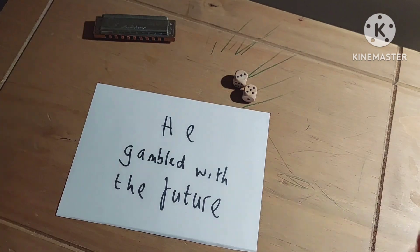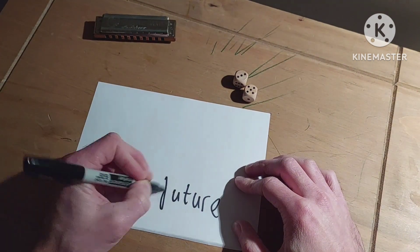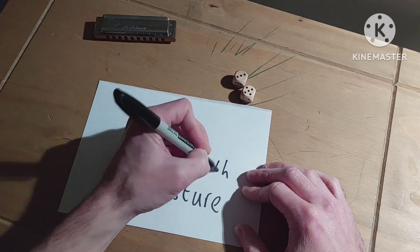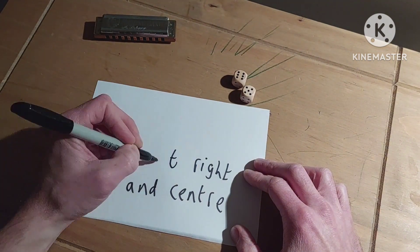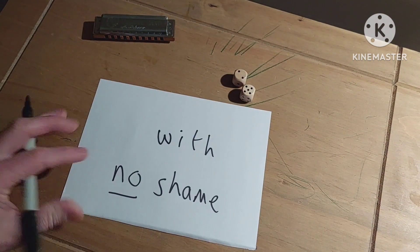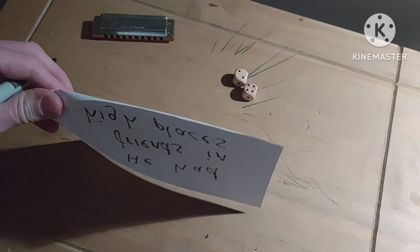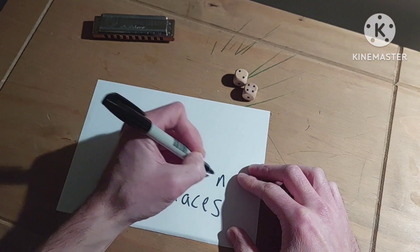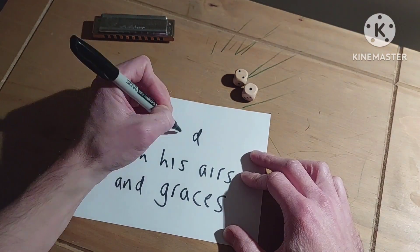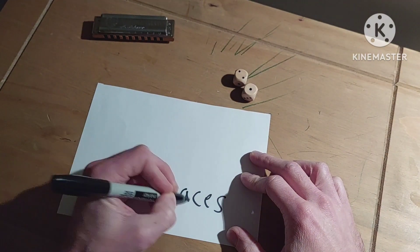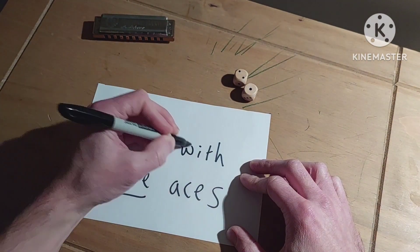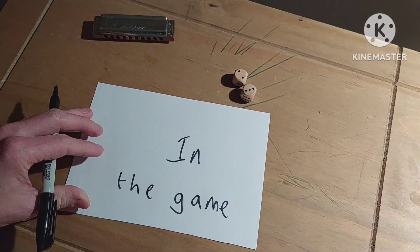He gambled with the future, he gambled with the past, he gambled left, right and centre with no shame. He had friends in high places and with his airs and graces, he was born with five aces in the game.